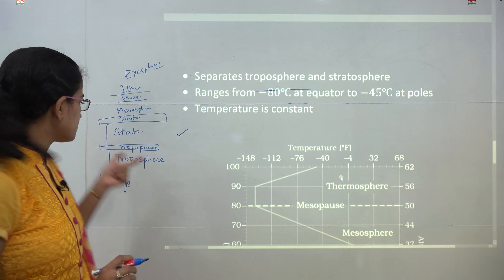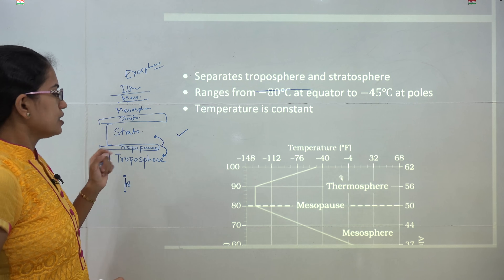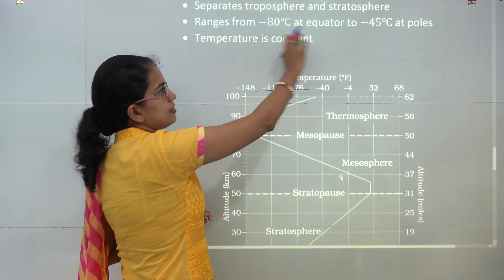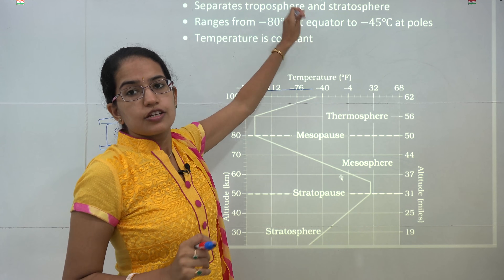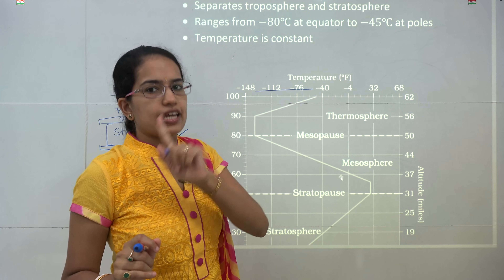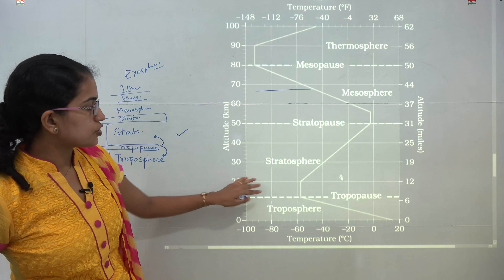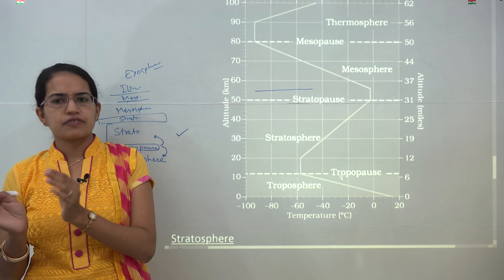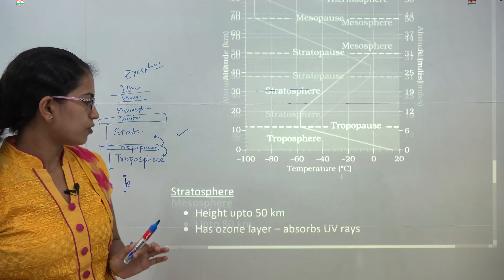The tropopause is the layer that separates the stratosphere and troposphere. Its temperature ranges from minus 80 degrees Celsius at the equator to minus 45 degrees at the poles. So the equator has a much colder temperature than the poles — a very unique phenomenon. In the tropopause, temperature remains constant: around minus 80 at the equator and minus 45 at the poles.